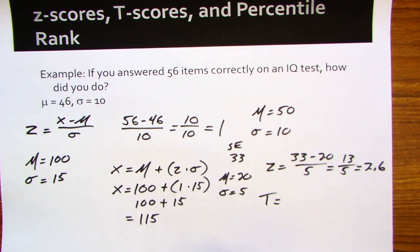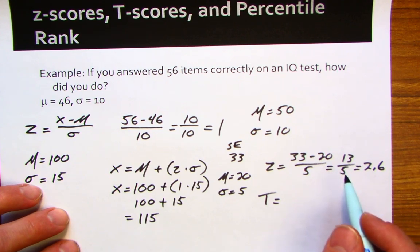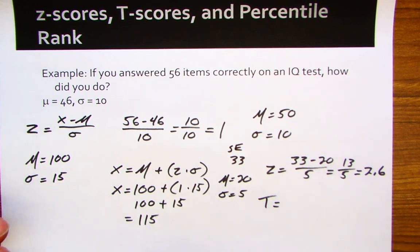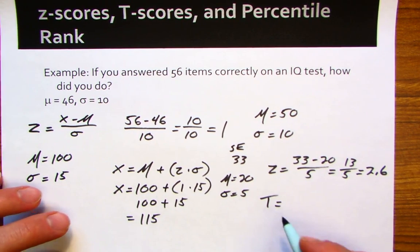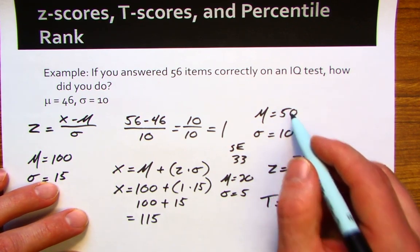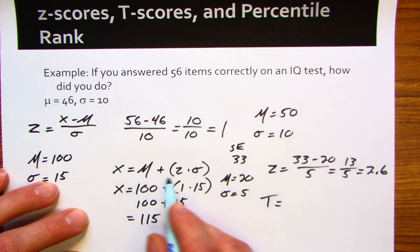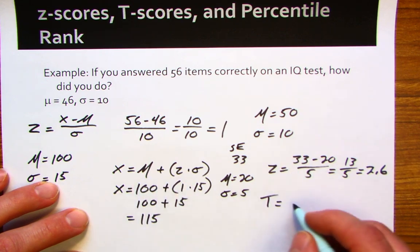Because it's within the z-distribution, it's more difficult to translate for people. So remember for the t, the mean is always 50 and the standard deviation is always 10. We put that into this formula here. We're going to figure out what the individual's t-score would be.